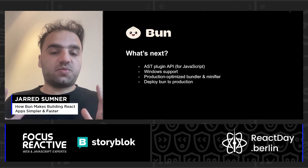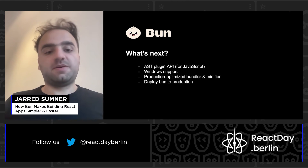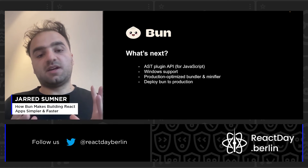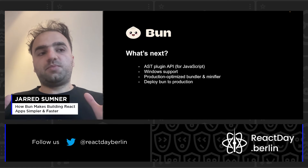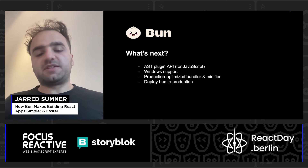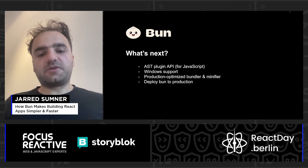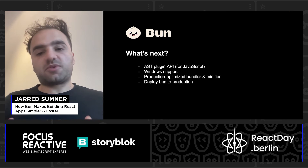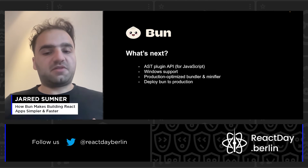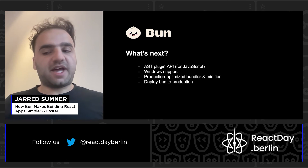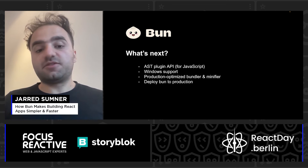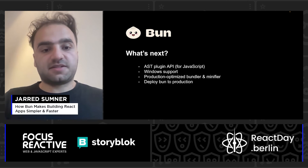What's coming up: we're going to be adding an AST plugin API and native Windows support. Currently we support Windows Subsystem for Linux, which works great, but it's a better experience to use actual Windows. Today, our bundler and minifier is not production-optimized — there's no minifier in fact — but we need to build that. The other thing we need to help with is making it easier to plug Bun into production. That's sort of the next step.